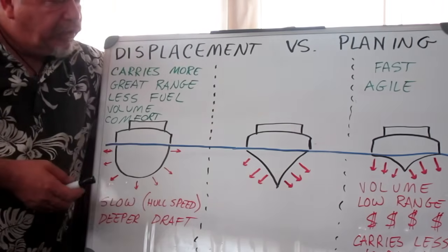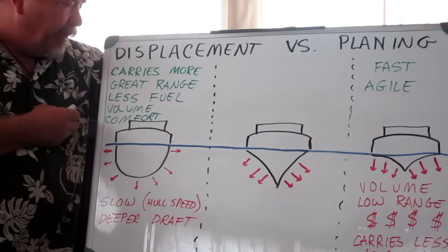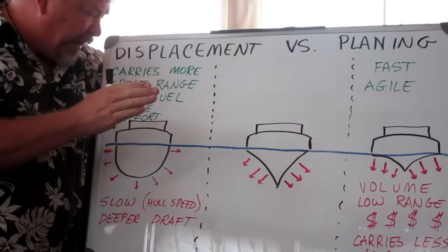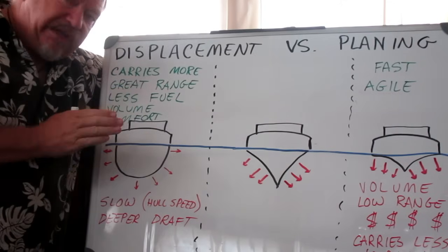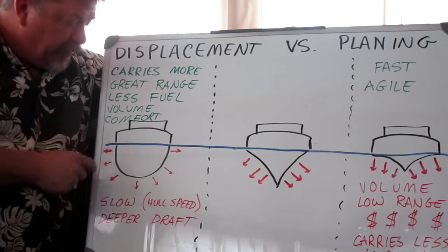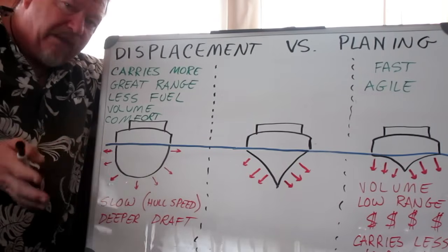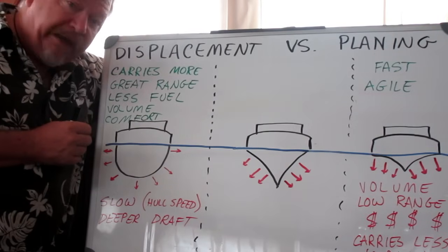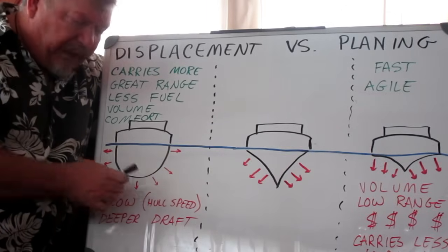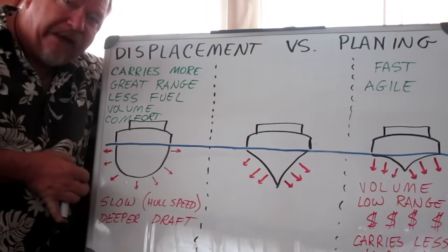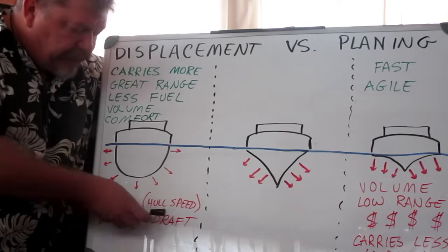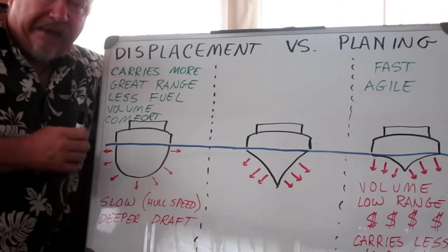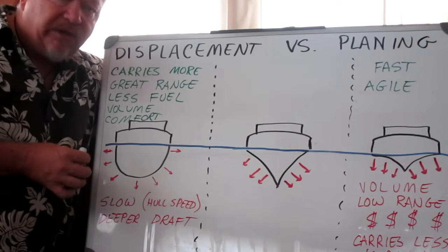Relative to a planing hull, a displacement hull boat will carry more weight because of the displacement, it has a greater range, it uses less fuel with typically a smaller engine, there's more volume inside, and the motion of the boat is more comfortable. On the other hand it's slower — if you look at my video on hull speed that'll give you an idea just how slow. And it typically has a deeper draft, meaning it sticks down further in the water, which might eliminate some areas you'd like to cruise in.